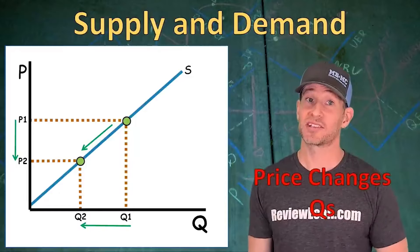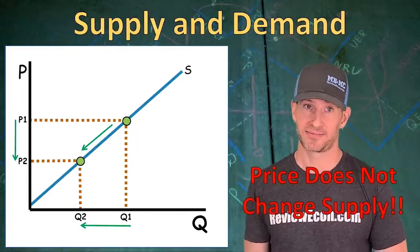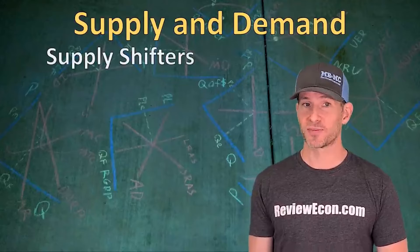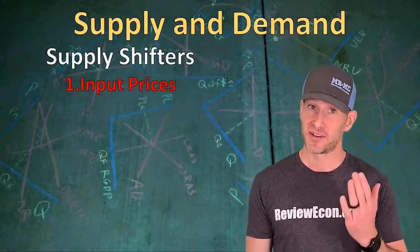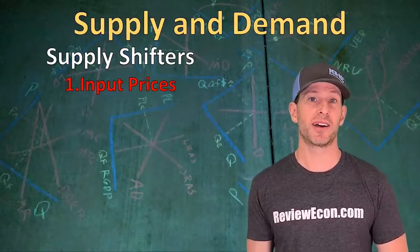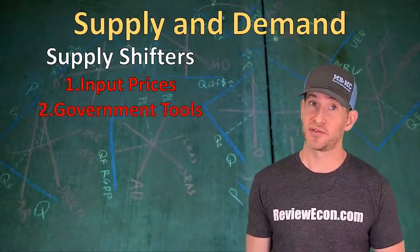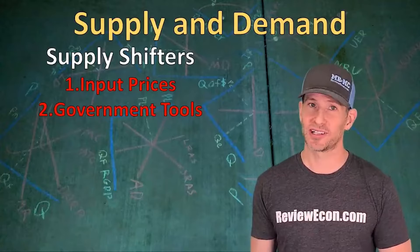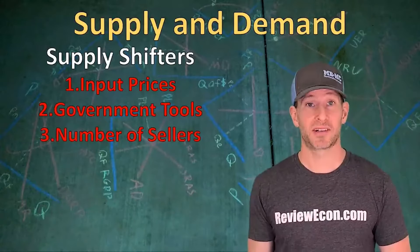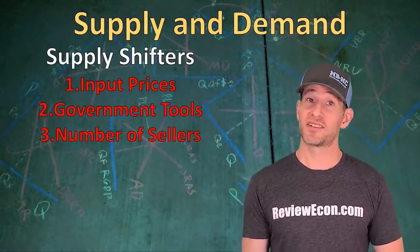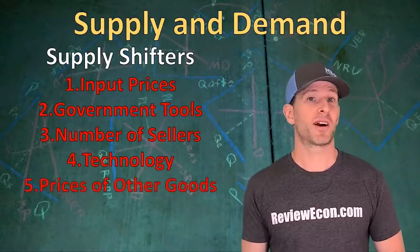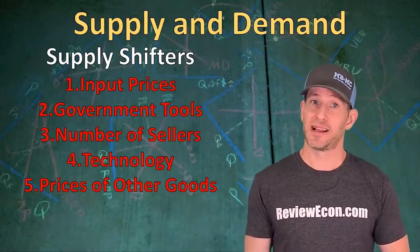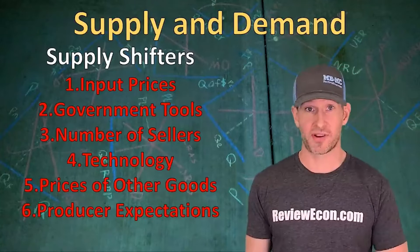There are other things besides price that can shift the supply curve. Supply shifters include: input prices — an increase in resource prices decreases supply; government tools — taxes decrease supply, subsidies increase it, and regulations generally decrease supply; number of sellers — more sellers increase supply, fewer decrease it; changes in technology generally increase supply; prices of other goods producers can make; and expectations for the future.